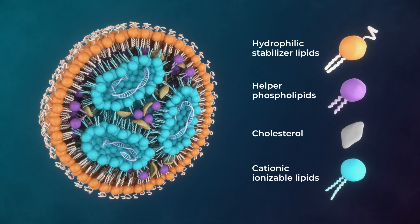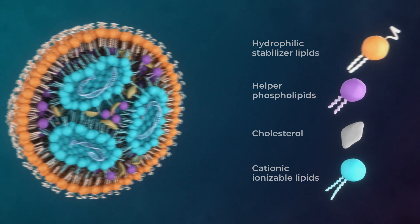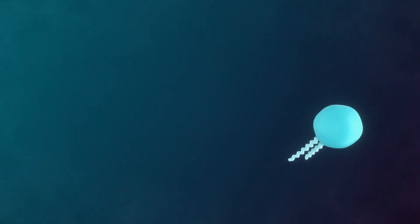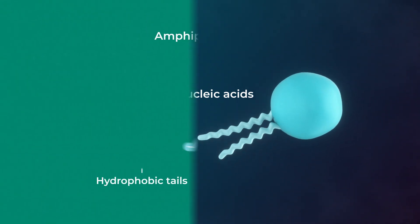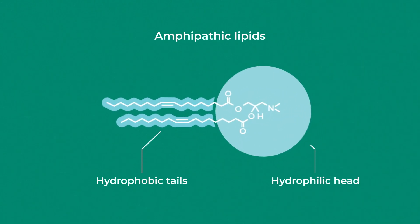Ionizable lipids are the most important excipient, as they play a significant role in protecting nucleic acids and facilitating their cytosolic transport. They have hydrophobic hydrocarbon tails and a hydrophilic polar head group.